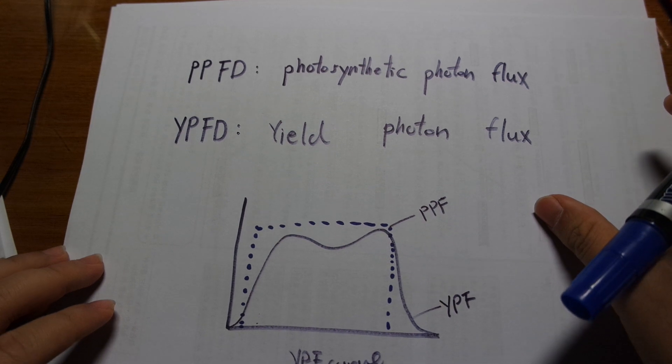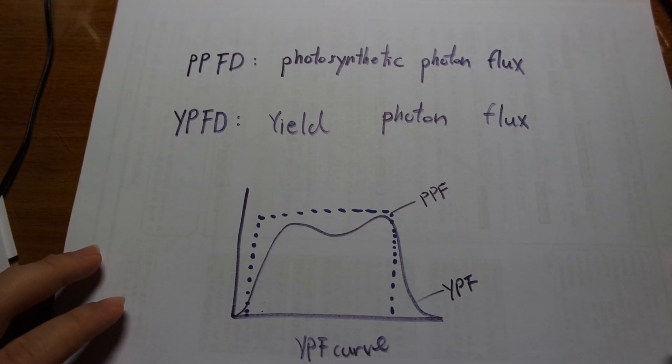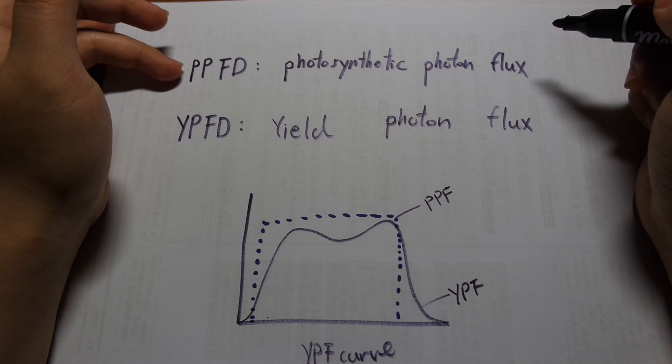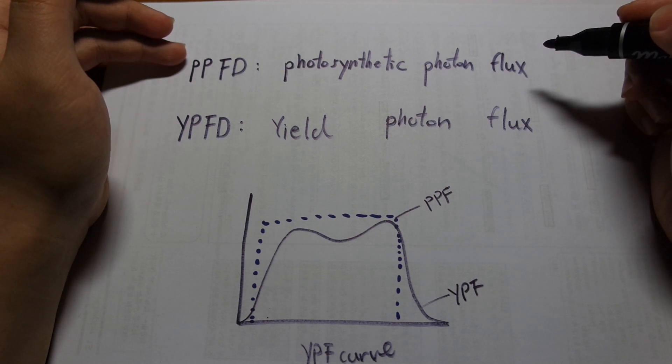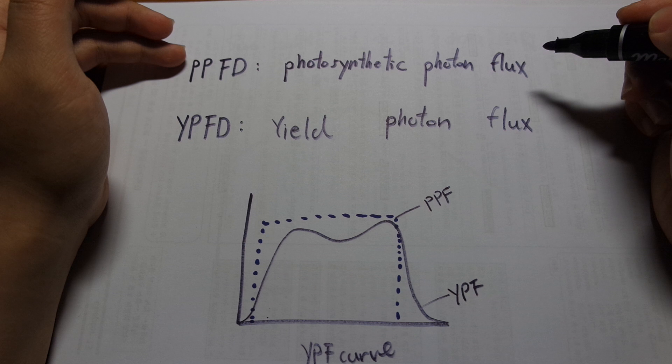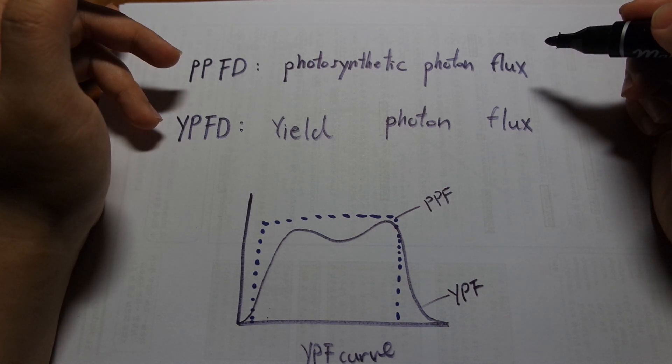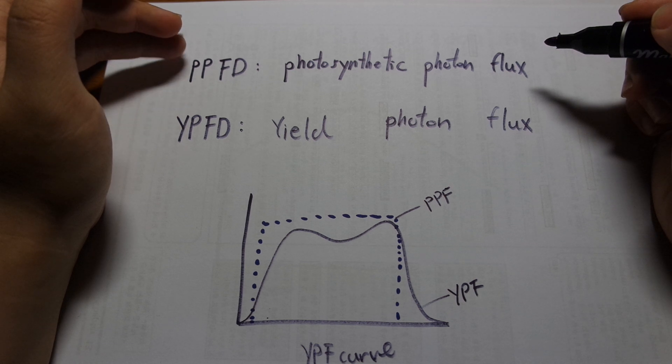People just talk about PAR as if everything is equal but there are actually two different types of PAR, a lot of people don't know this, there is PPFD and YPFD. PPFD is an abbreviation for photosynthetic photon flux, YPFD is yield photon flux and the difference is how it is measured.